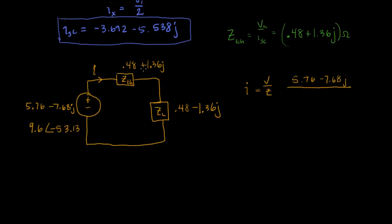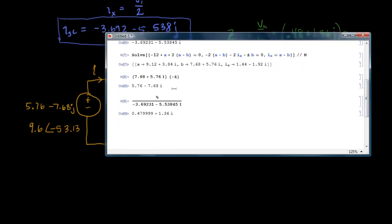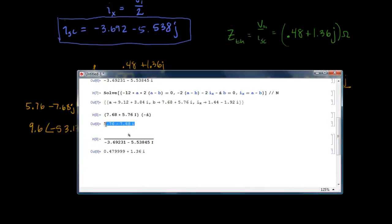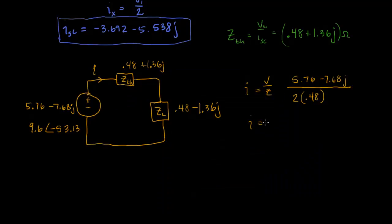And so we'll get 5.76 minus 7.68J over... Now look what happens here. We have plus 1.36J minus 1.36J. And so those just go away. And we get .48 times 2. And that's going to give us our current. So I'll just calculate it really quickly. So I'm going to take the voltage here and I'm going to divide it by 2 times .48. And I get 6 minus 8i.